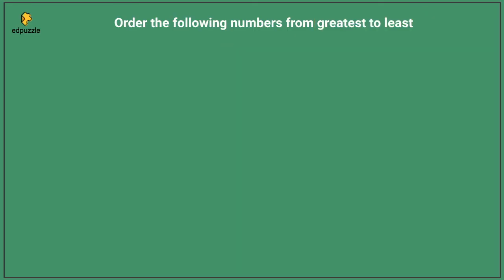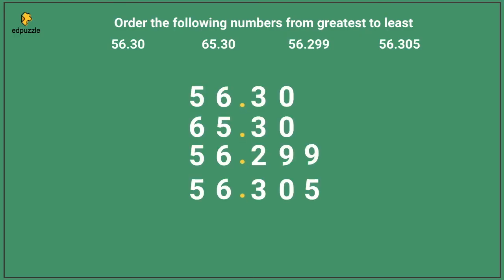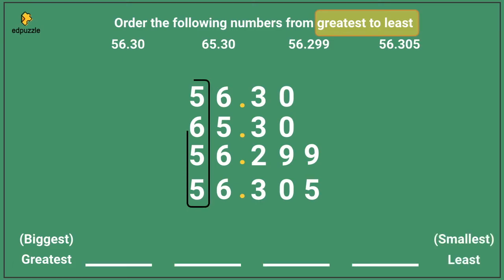Let's do one of these together now. Let's order the following numbers from greatest to least: 56.30, 65.30, 56.299, and 56.305. I will stack these numbers on top of each other, and I need to make sure I line up the decimal points. Looking back at the problem, I will be organizing them from greatest to least. When I compare the largest place value, I can see that this 6 is different — the 6 is bigger than the 5s, so 65.30 must be bigger than the rest of the numbers.